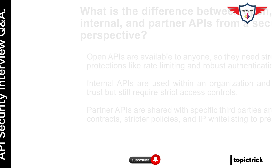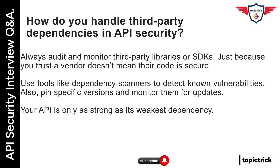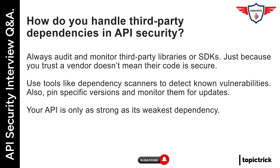How do you handle third-party dependencies in API security? Always audit and monitor third-party libraries or SDKs. Just because you trust a vendor doesn't mean their code is secure. Use tools like dependency scanners to detect known vulnerabilities. Also, pin specific versions and monitor them for updates. Your API is only as strong as its weakest dependency.